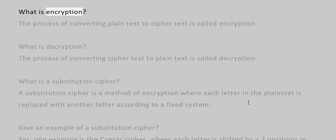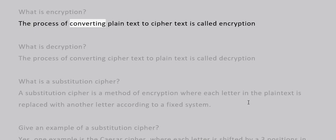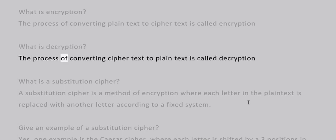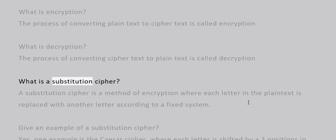What is encryption? The process of converting plain text to cipher text is called encryption. What is decryption? The process of converting cipher text to plain text is called decryption.